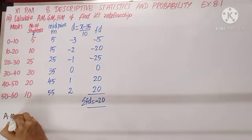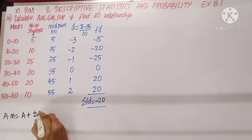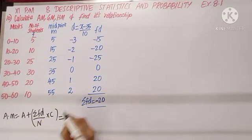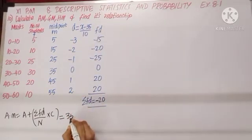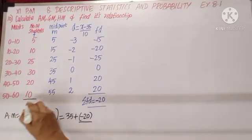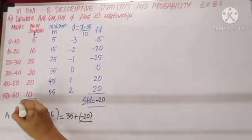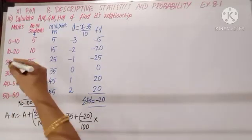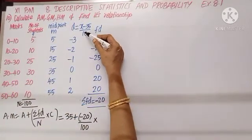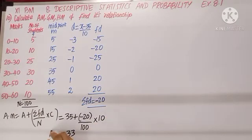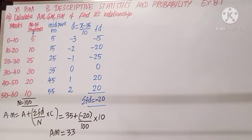Using a calculator, sigma(fd) = −20. The arithmetic mean formula is: AM = a + (sigma fd / n) × c. Here a = 35, sigma fd = −20, n = 100 (total frequency), c = 10 (class interval length). Substituting: AM = 35 + (−20/100) × 10 = 35 − 2 = 33.